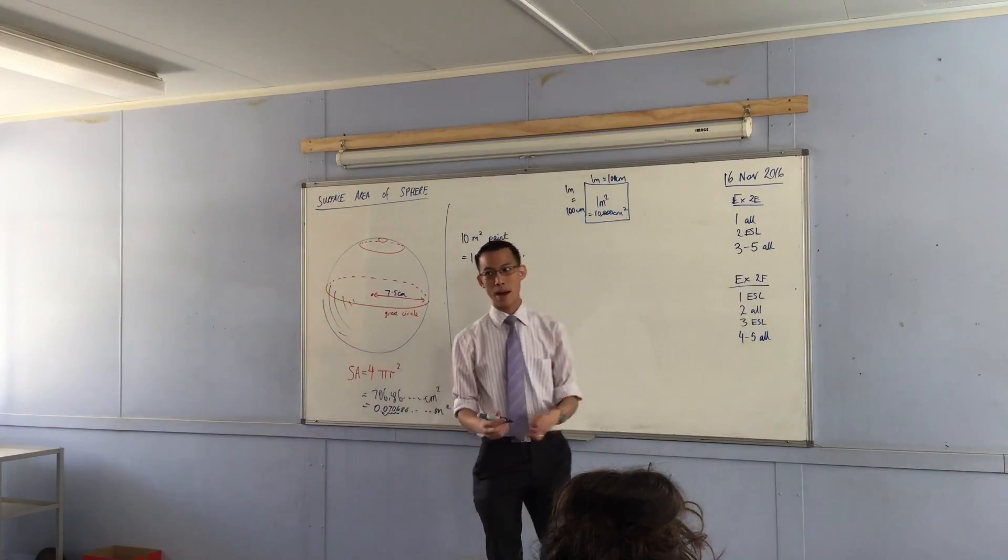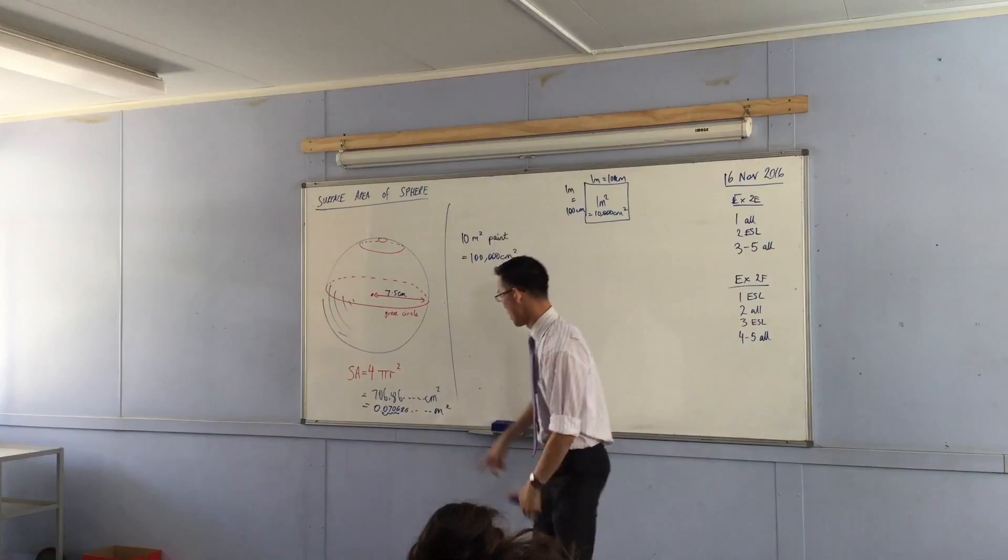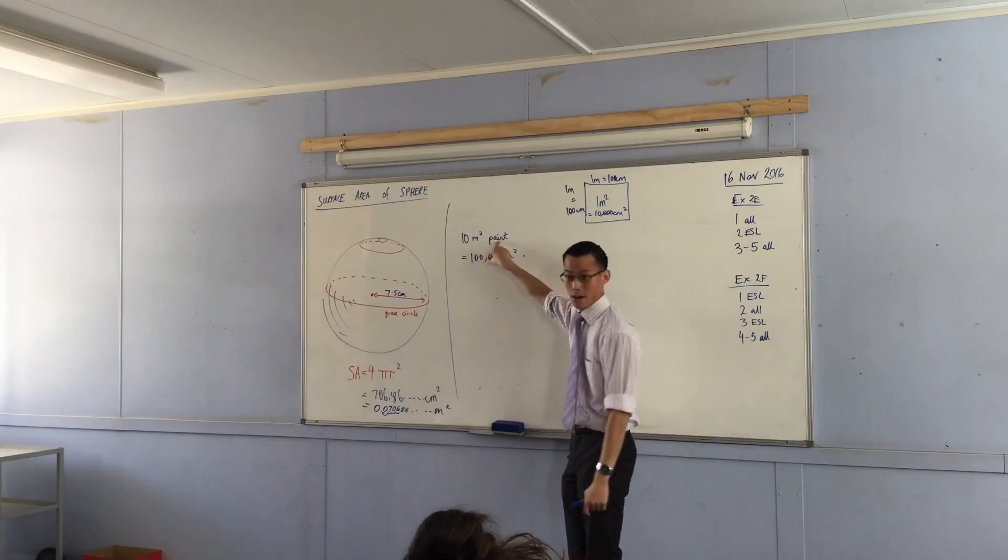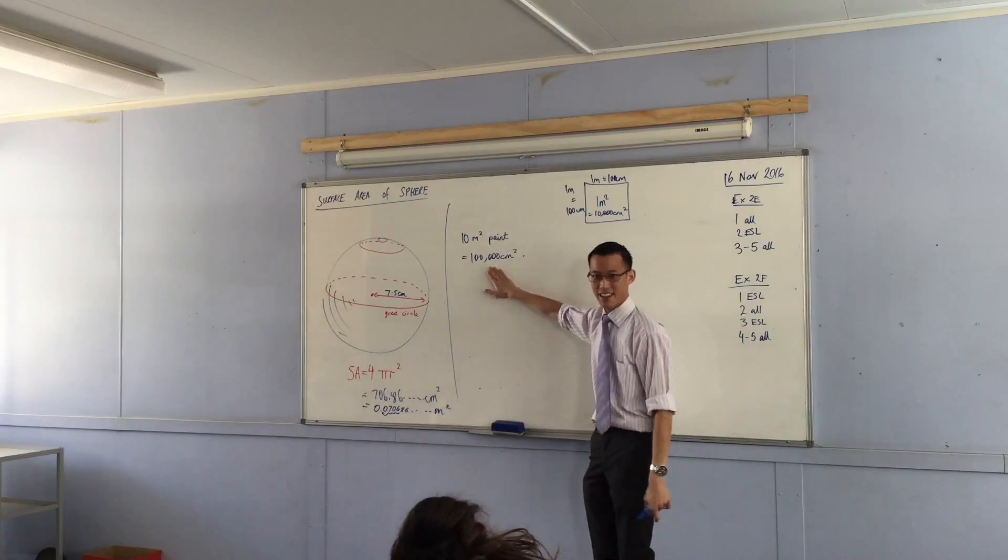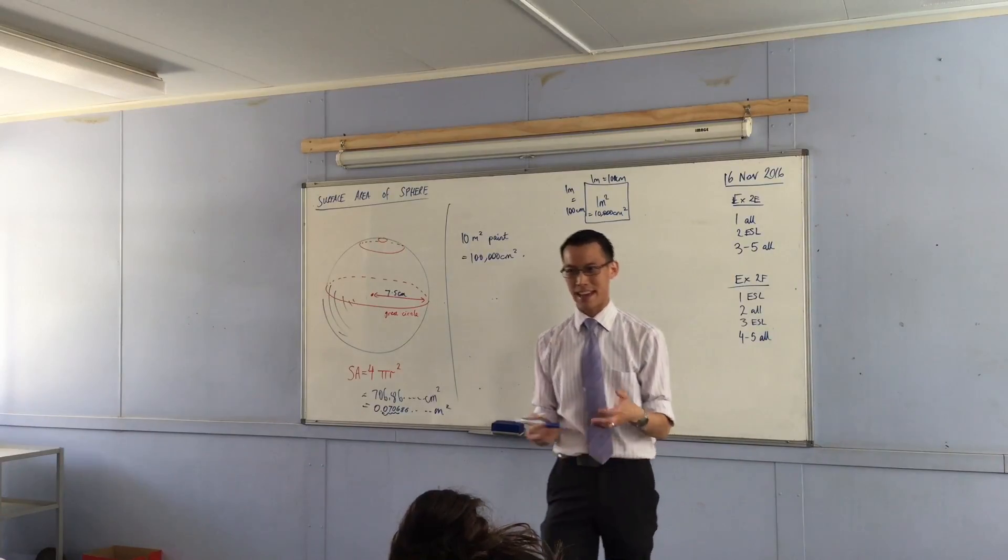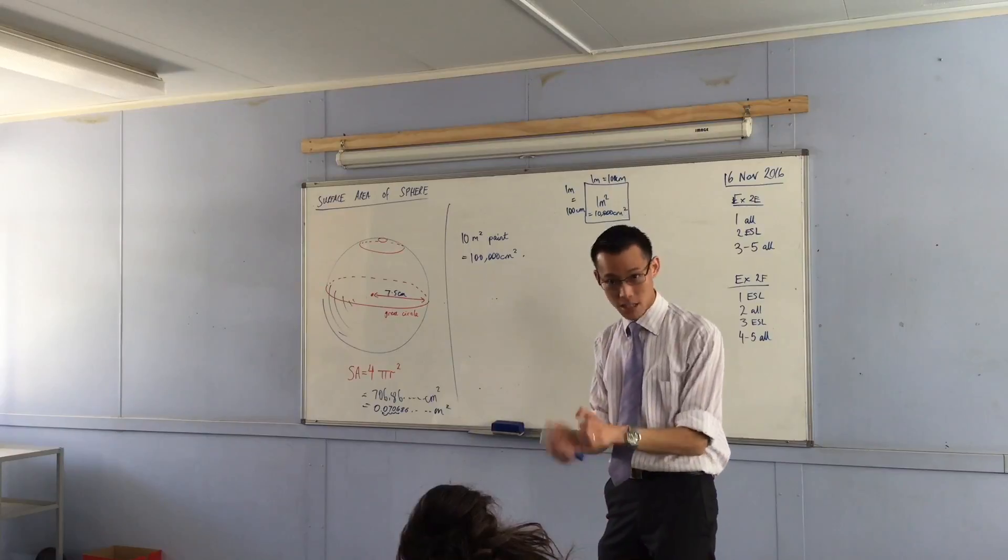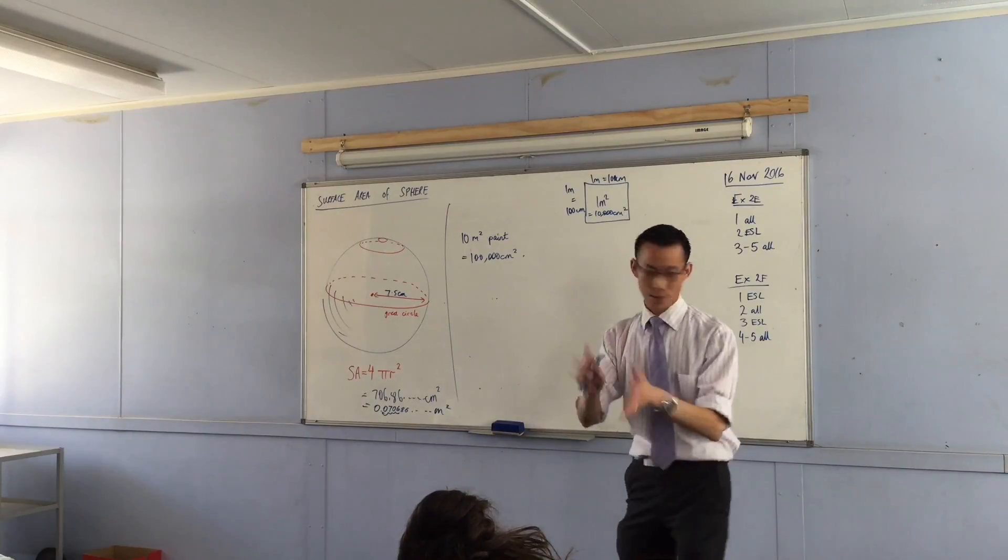But if I have a choice about which pair of numbers I have to use, this one and one, or this one and a hundred thousand, I'm going to choose the one with less weirdo decimals in it. It's just easier to work with.